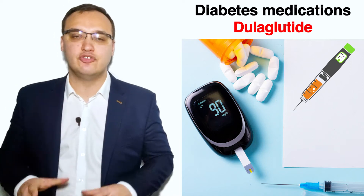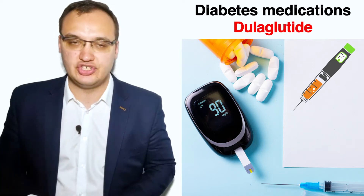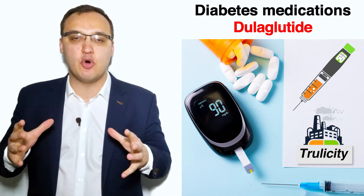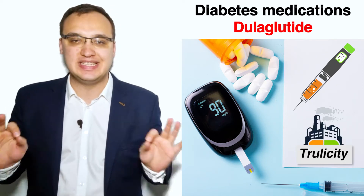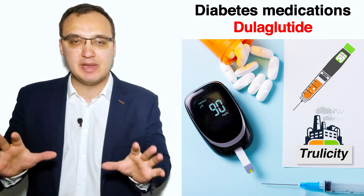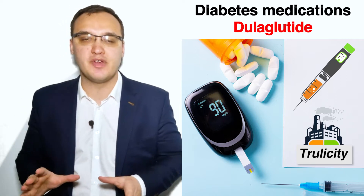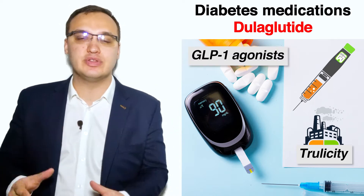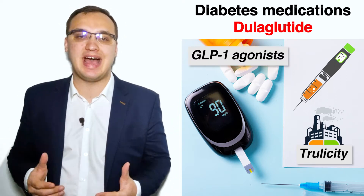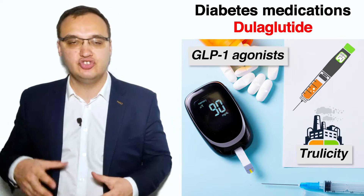Hello, today we will look at dulaglutide, which has a trade name of Trulicity, and that belongs to the group of medications called GLP-1 agonists.